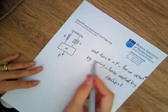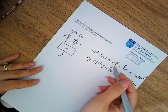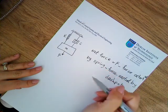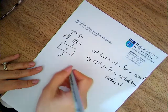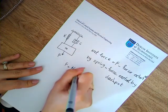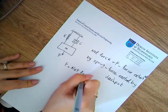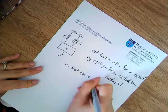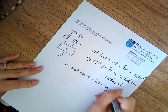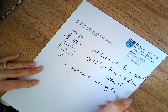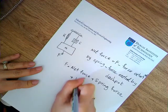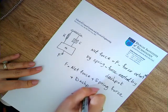If I rearrange them, I keep F positive and move the spring and dashpot forces to the other side, so they become positive. I will have F equal to the net force plus the spring force plus the dashpot force.